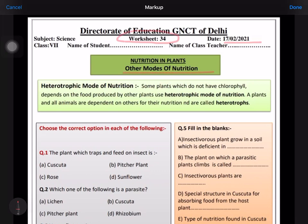We are revising heterotrophic mode of nutrition, which is the mode of nutrition in which the plants or organisms that are not having chlorophyll depend on others for food. Such plants and animals dependent on others for food nutrition are called heterotrophs.